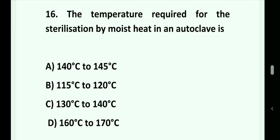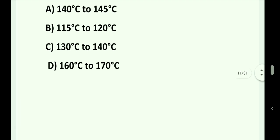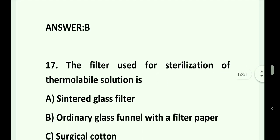Question number 16. The temperature required for sterilization by moist heat in an autoclave is: Option A. 140 to 145 degrees Celsius. Option B. 115 to 120 degrees Celsius. Option C. 130 to 140 degrees Celsius. Option D. 160 to 170 degrees Celsius. Answer is Option B. That is 115 to 120 degrees Celsius.